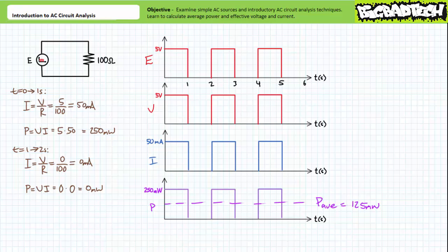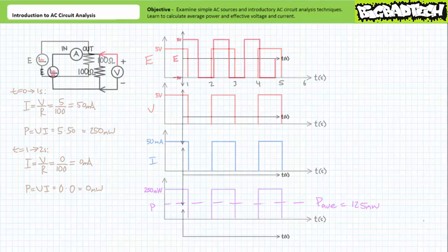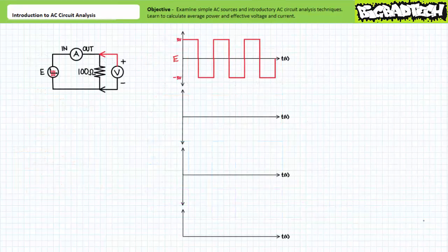One might assume this might necessitate a wholly different approach to circuit analysis, but rest assured, those techniques as presented in the Basic Electronics One DC circuit analysis playlist available at the Big Bad Tech channel are just as valid now as they were then. Case in point: take this simple circuit consisting of a pulsed AC voltage source, an ammeter, a 100-ohm resistive load, and a voltmeter hooked up in the following fashion.